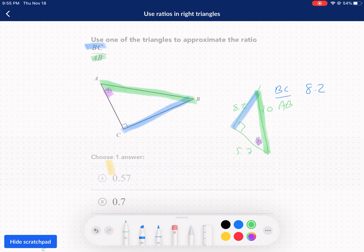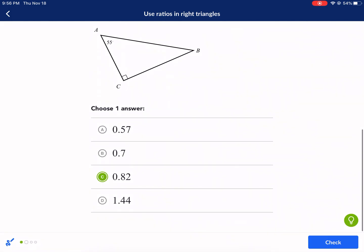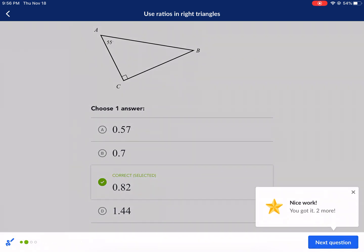If they have the same angles, they have similar triangles. So 55, 55, similar triangles. Over AB, we know that's 10. I just have to divide this, and that's going to give me my ratio. So pretty simple here, 8.2 divided by 10. We can just move the decimal place over one place. 8.2 divided by 10 is 0.82. Check it, moving on.